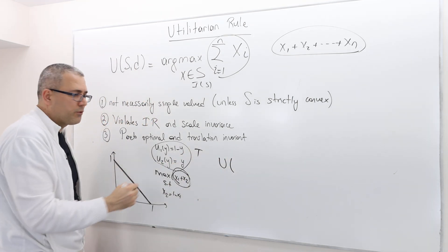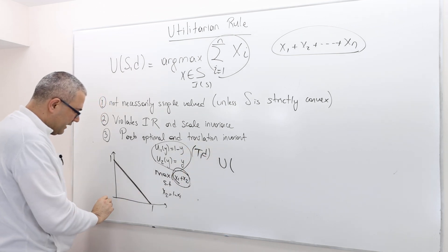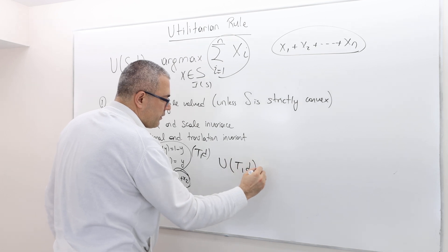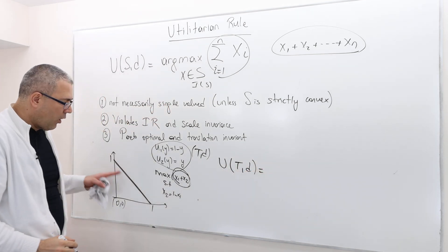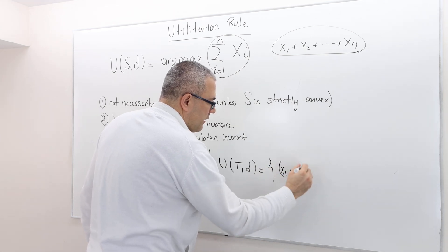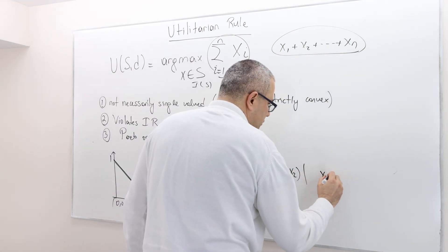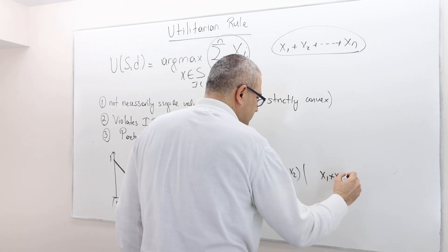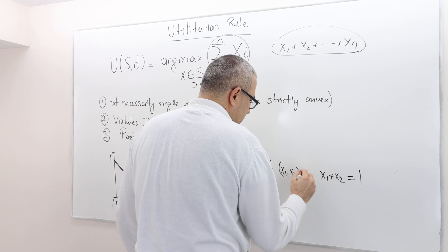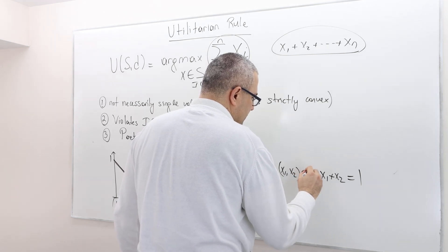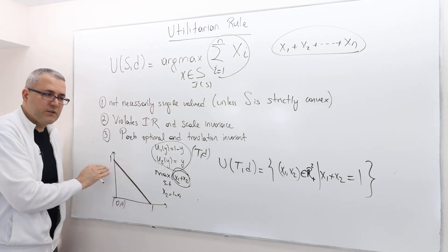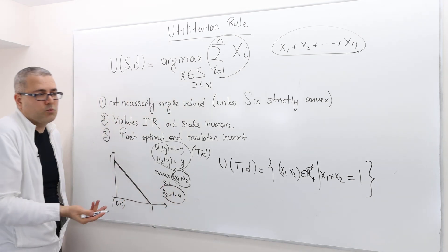That means the utilitarian solution to this problem—let's call this bargaining problem (T,d), where d is the (0,0) point—the utilitarian solution is all those points. So it's (x1, x2) such that x1 plus x2 equals 1.